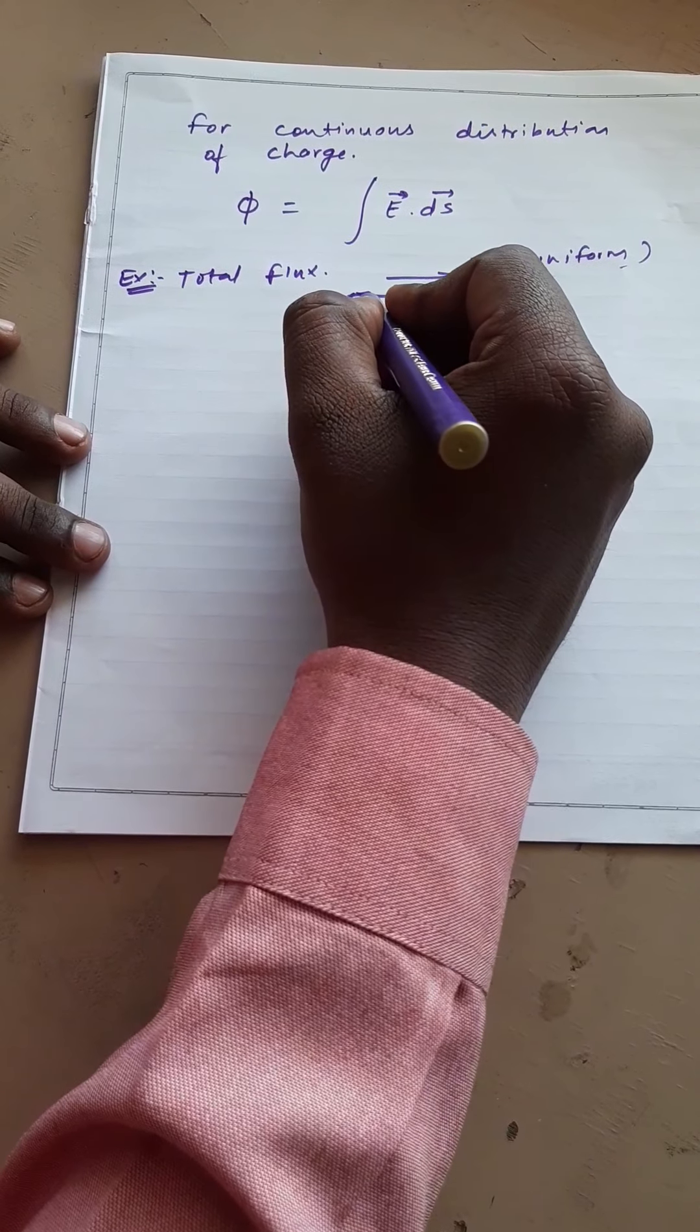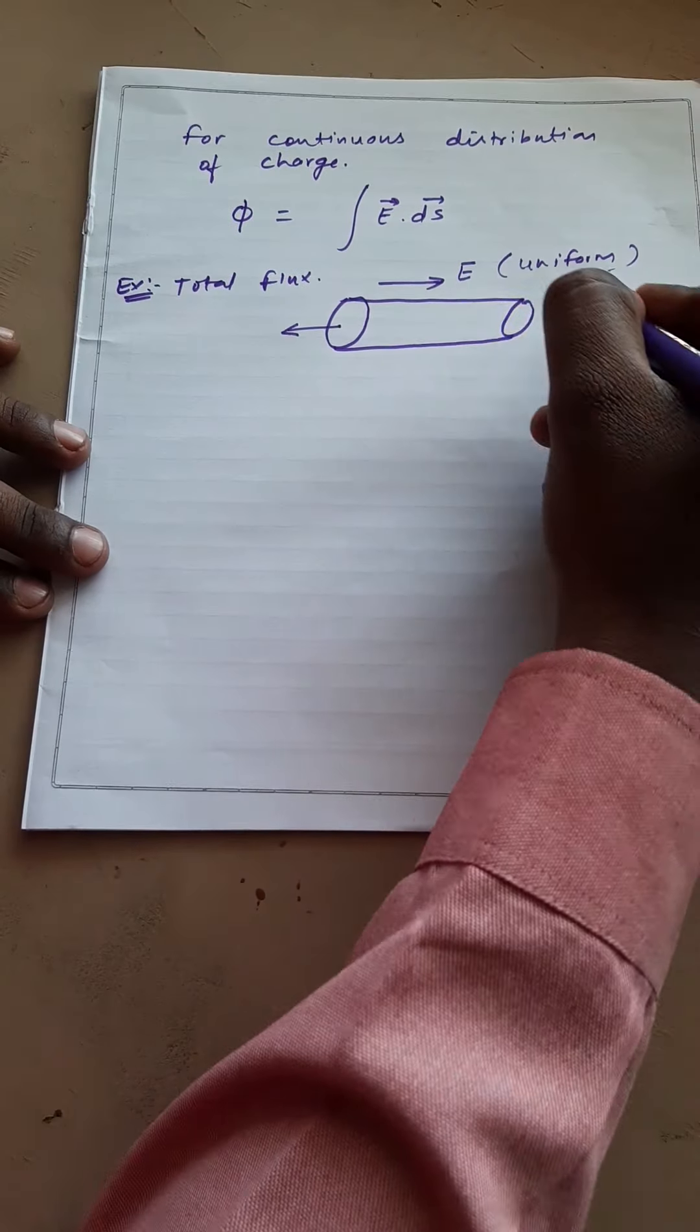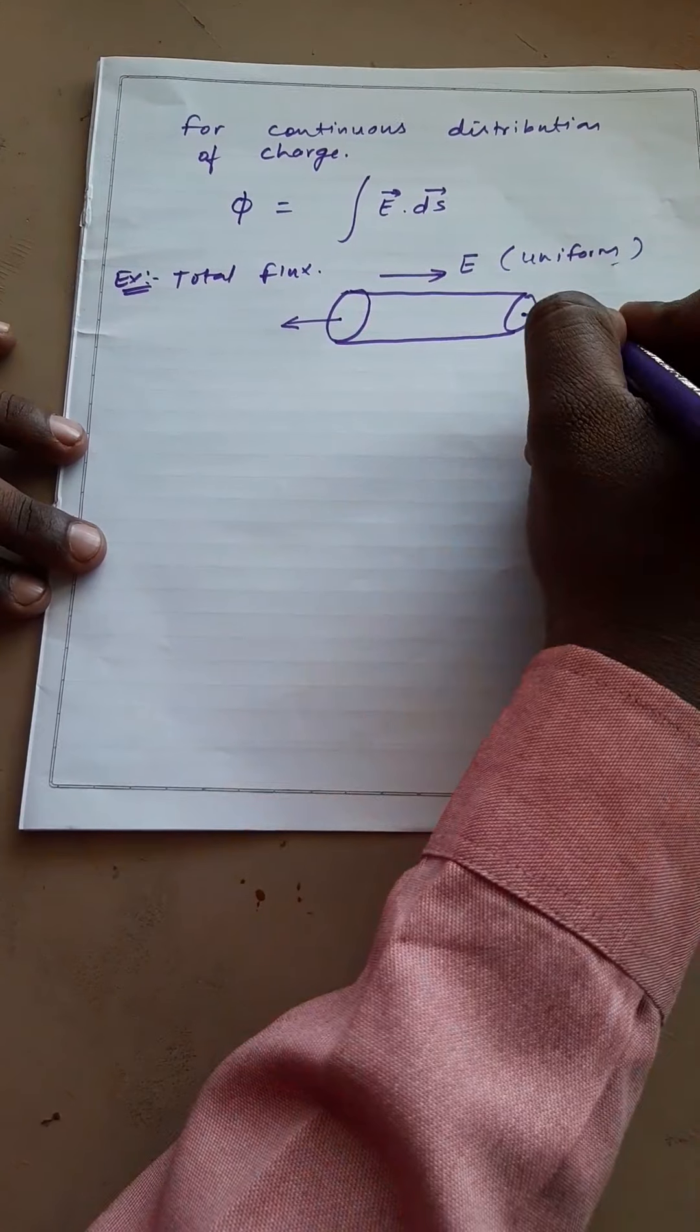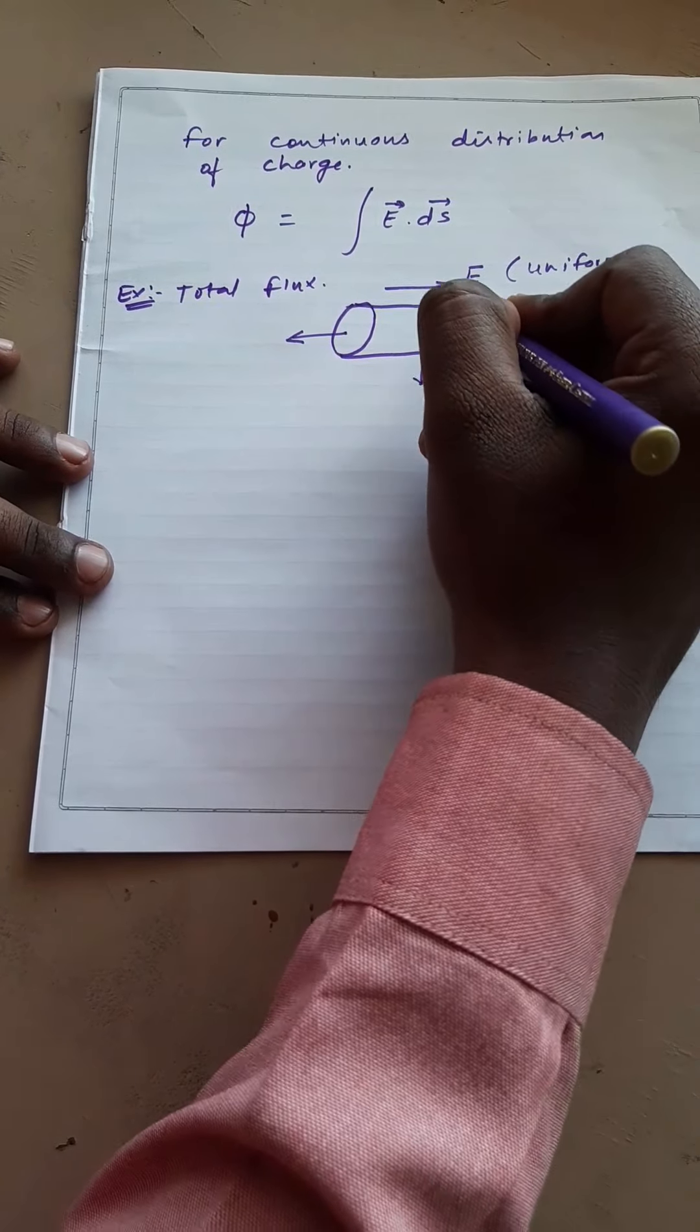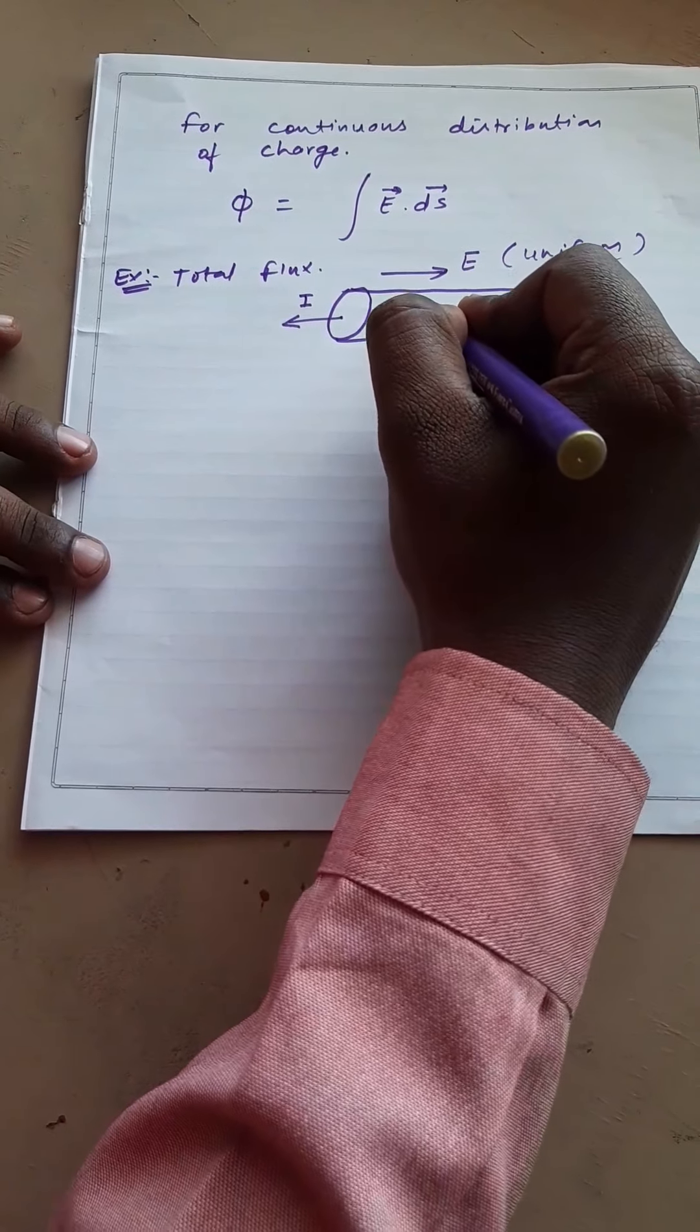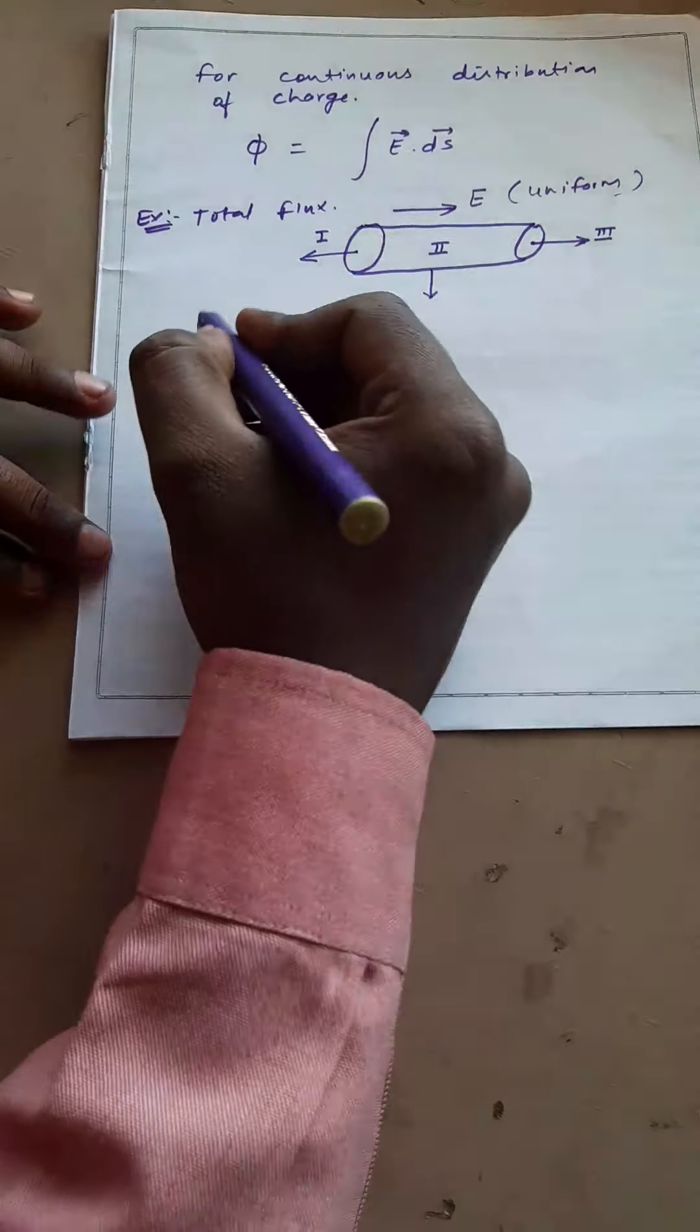let us assume normal vector for this is in this direction, for this surface in this direction and for the curved surface in this direction. We are considering three surfaces: first, second and third. Now,